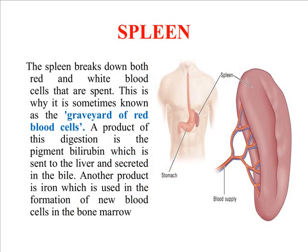The spleen breaks down both red as well as white blood cells, so it is also known as the graveyard of red blood cells.